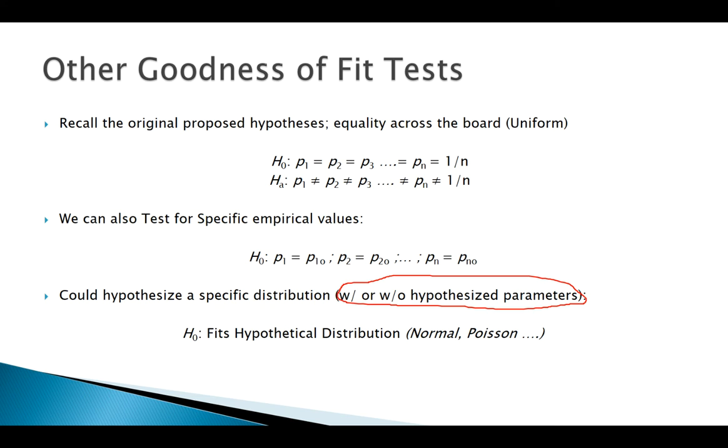This point here, with or without hypothesized parameters, can be important. That's what that P in our degrees of freedom represents. The only way we treat these tests any differently is the mechanics look the same, but we'll calculate those expected counts differently based on the type of null that we have.